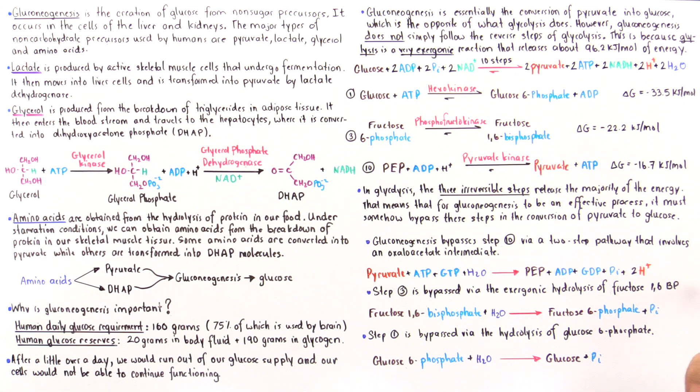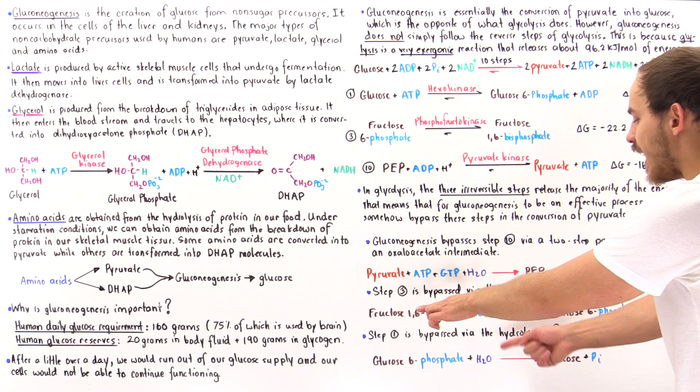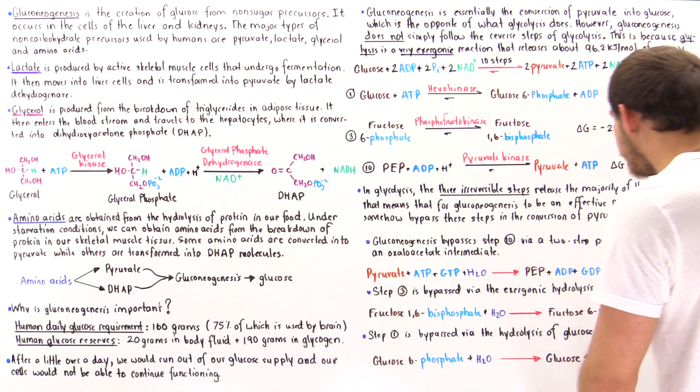So we see that step 3 is bypassed via an exergonic hydrolysis of fructose 1,6-bisphosphate into fructose 6-phosphate. So this is hydrolyzed by water and the activity of a special enzyme to produce the fructose 6-phosphate and the orthophosphate.